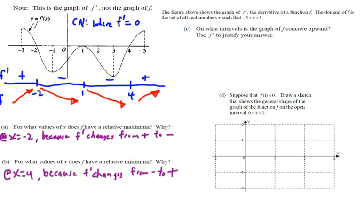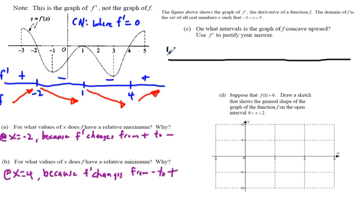Let's shift gears to look at part c: on what intervals is the graph of f concave upward? Now we're going to look at our f' of x and draw a new number line. What we're looking for are what we call PPOIs — potential points of inflection.